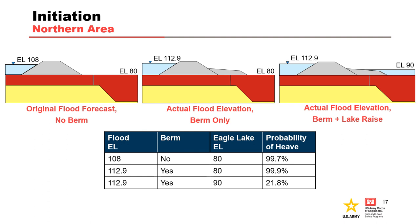The second case adjusted the flood elevation to the actual Mississippi stage of 112.9 feet and accounted only for the presence of the emergency berm on the land side of the levee. This scenario had a flood differential of approximately 33 feet, by far the largest loading experienced by the embankment, resulting in a probability of heave of 99.9%. The final case evaluated the actual conditions present during the flood — a flood elevation of 112.9 feet, the emergency berm, and Eagle Lake at elevation 90 feet — with a flood differential of approximately 23 feet and a probability of heave of 21.8%. Based on this analysis, the combination of the emergency berm and the Eagle Lake raise produced a significant reduction in the probability of initiation of backward erosion piping in the northern area.